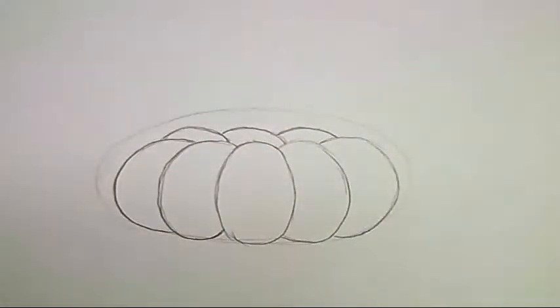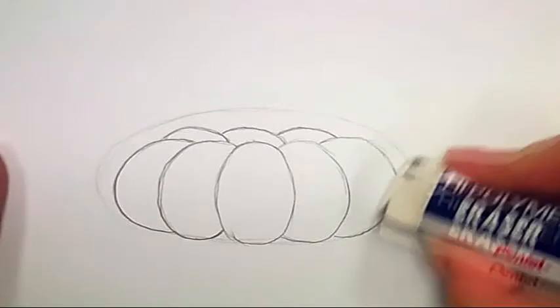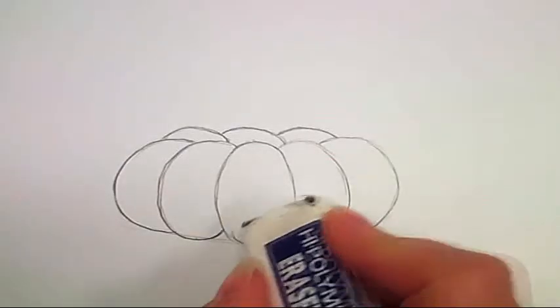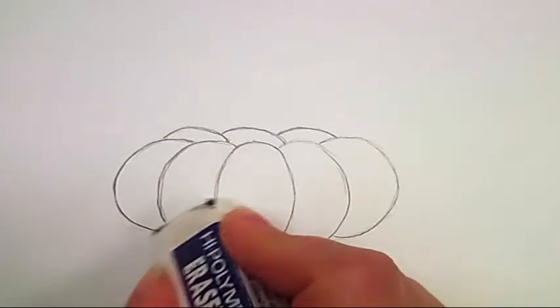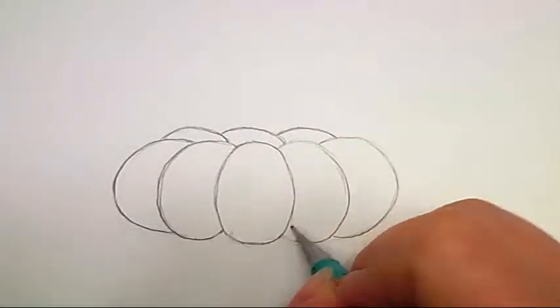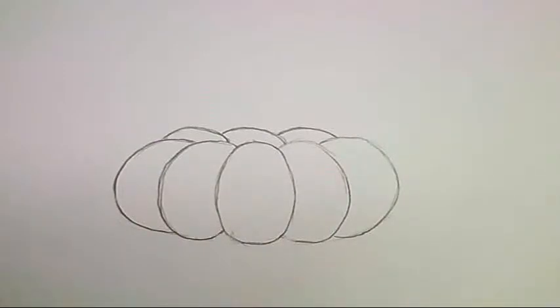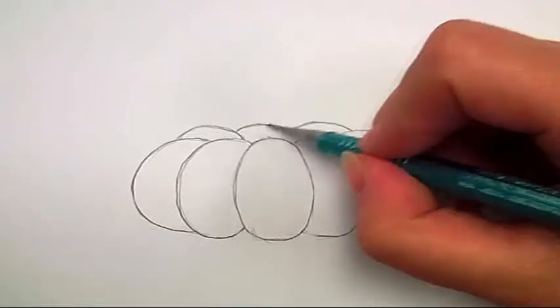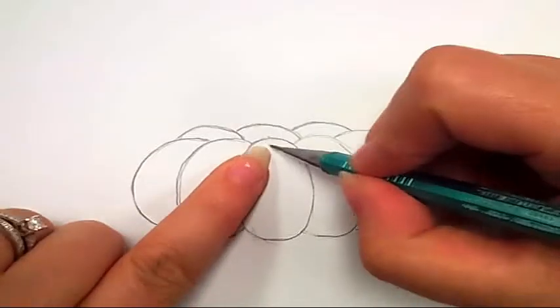Now let's grab our eraser and take off that extra shape guideline that we had. Be careful when you erase because you don't want to smear your artwork, but we really haven't put too much on it yet to make it scary looking. Let's put the stem right in the middle. Look at your placement. I don't want it completely in the middle, let's put it over toward the right side a little.